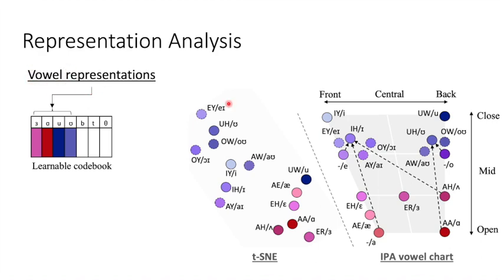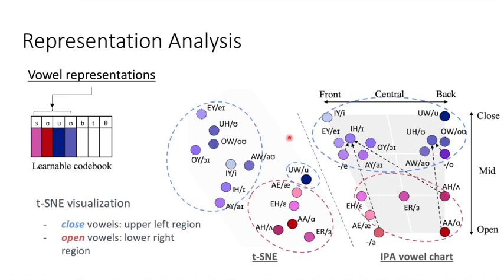The left part is the t-SNE visualization of representations learned by our model. The right part is the IPA vowel chart defined by linguists. The x-axis of this chart means how close the tongue is to the front teeth, and the y-axis of this chart means how close the tongue is to the roof of the mouth.